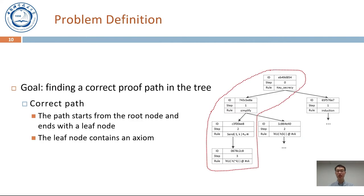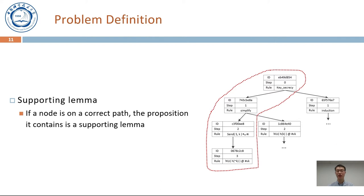In the verification process, the goal is finding a correct proof path in the tree. A path is correct if and only if the path starts from the root node and ends with a leaf node, which contains an axiom. Since the axiom is assumed to be true in our verification, we can verify the security property following the path. Here, if a node is on a correct path, we define the proposition it contains as a supporting lemma.